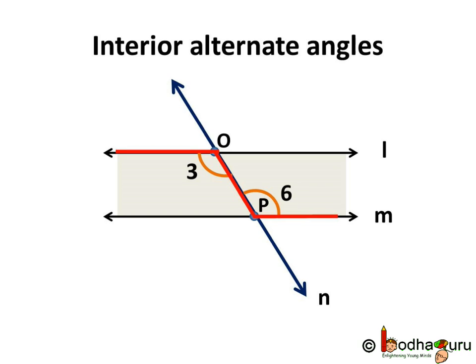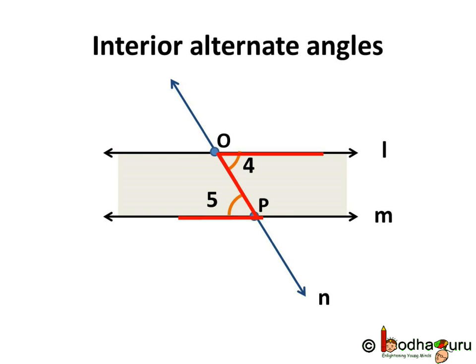How to identify interior alternate angles? If you see, alternate angles form a Z-shape, and so sometimes they are called Z-angles. The other pair of interior alternate angles also forms a Z-shape but in the opposite direction.